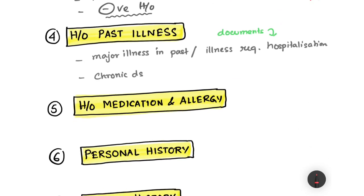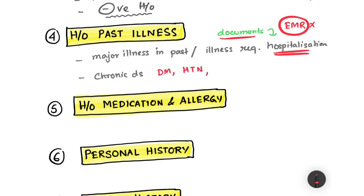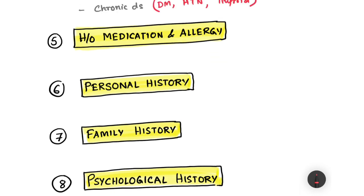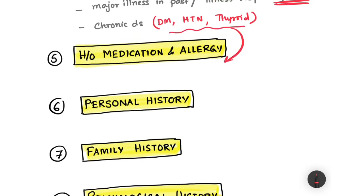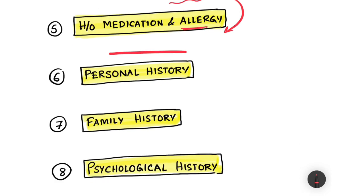Next is the history of past illness. Ask about major illnesses in the past — tuberculosis, COVID-19, major hospitalizations like fractures. This may correlate with the present illness. Again, ask for documents if your country doesn't have an EMR system. Also ask about chronic diseases like diabetes mellitus, hypertension, or thyroid disorders. After that comes history of medications and allergies — write all medications the patient is taking for chronic diseases and note any drug, food, or other allergies.